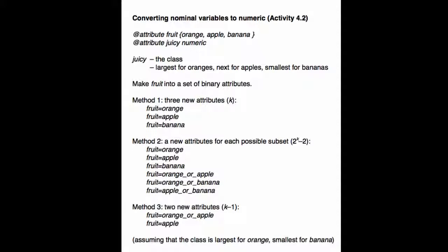And the third method is the one that's actually used, and this is the one that's described in that book. We create 2 new attributes, k minus 1 in general for a k-valued attribute. Fruit equals orange or apple, and fruit equals apple. So, for oranges, the first attribute is 1, and the second one is 0. For apples, they're both 1, and for bananas, they're both 0. It's assuming this ordering of the class values. Orange is the largest juiciness, and banana is the smallest juiciness.